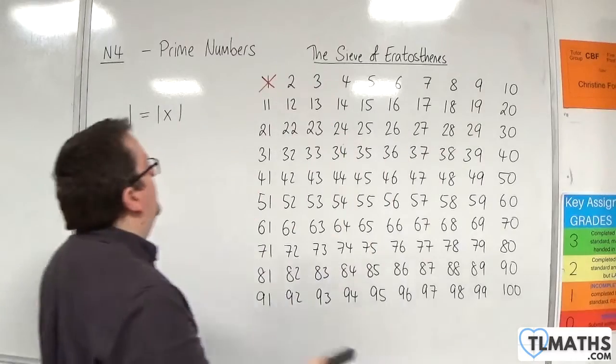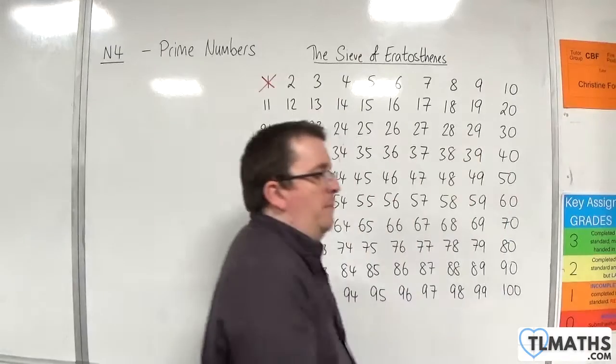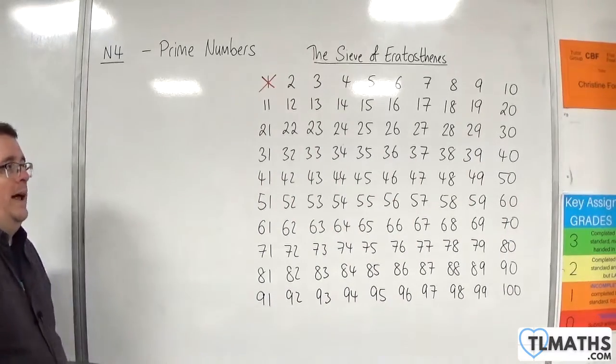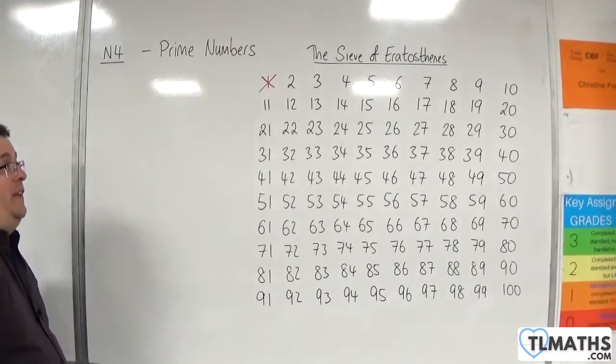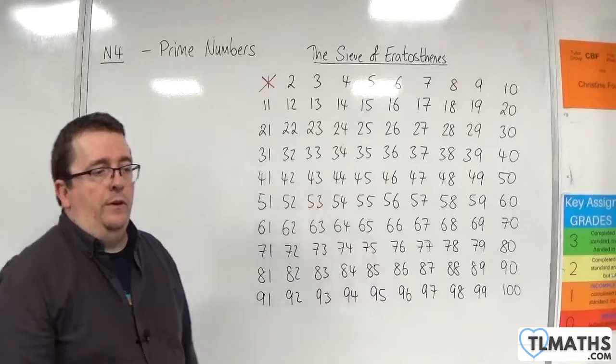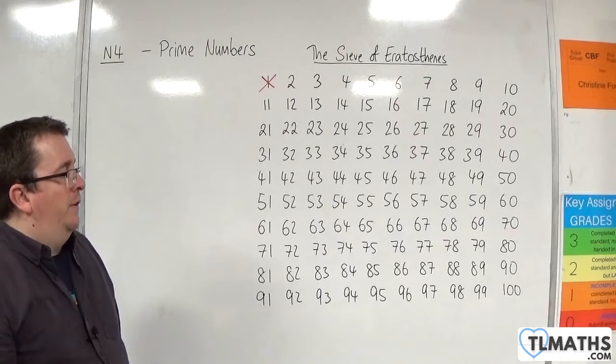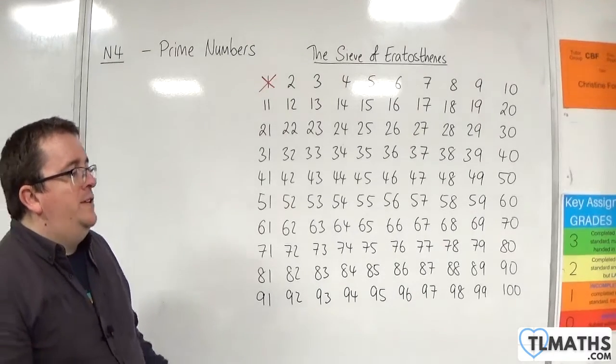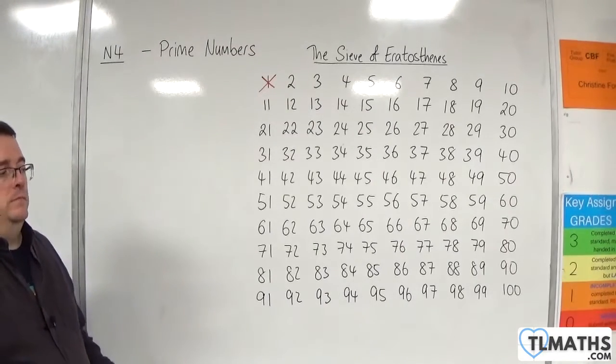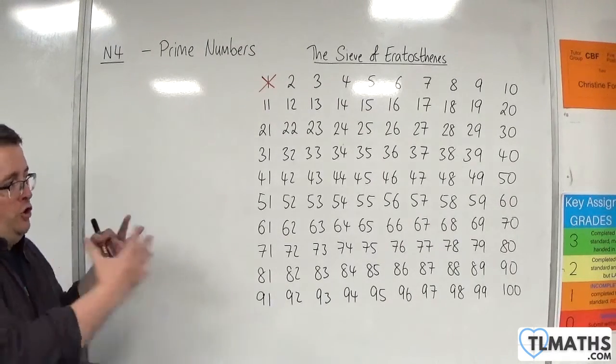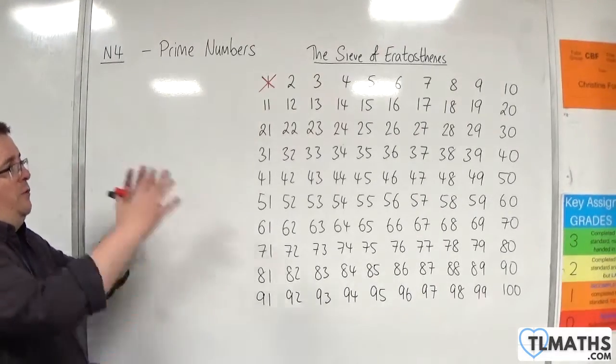Now what I'm going to be doing is I am going to be finding all of the prime numbers between one and one hundred and this is referred to as the sieve of Eratosthenes. And essentially it is an ancient method of finding all of the prime numbers up to however many however far you want to go. And I'll show you how it works in a moment.